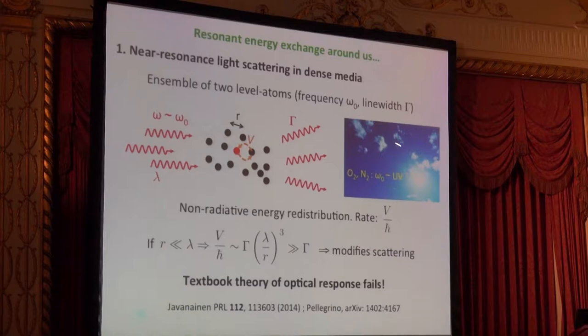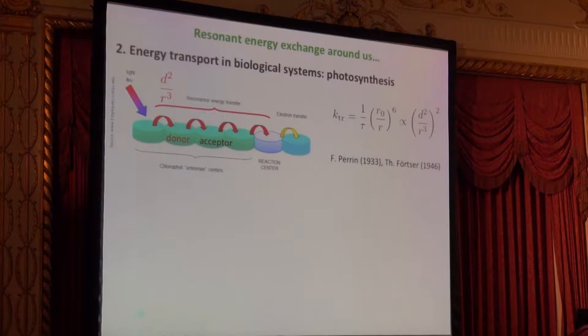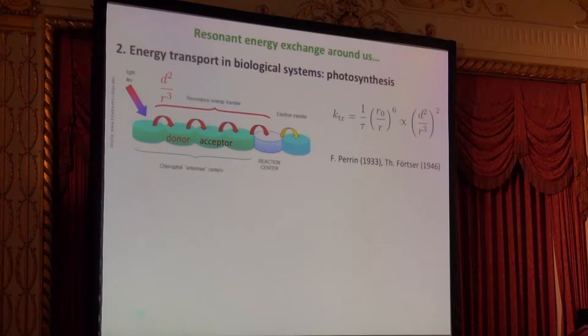One common example is scattering of UV radiation by nitrogen particles in the sky. The second example is energy exchange and transport in biological systems. In photosynthesis, energy is absorbed at one place in the chloroplast and converted by a chemical reaction at another. This process is highly efficient due to resonant energy transfer between donors and acceptors in a chain — demonstrated in the 1930s by Perrin and later by Förster — giving an energy transfer rate proportional to the square of the dipole coupling, yielding the classic R⁻⁶ rate.